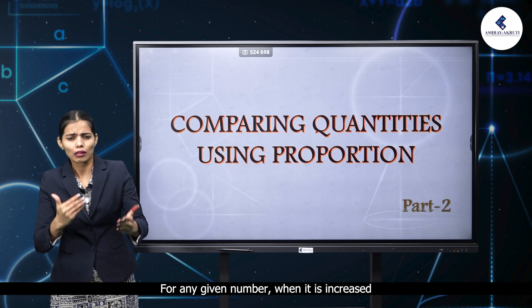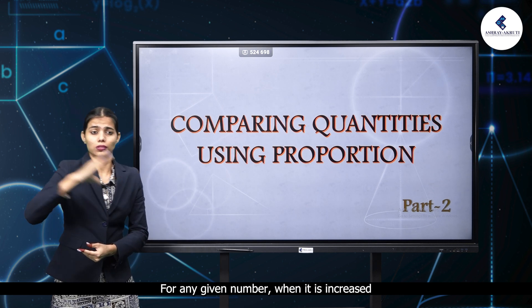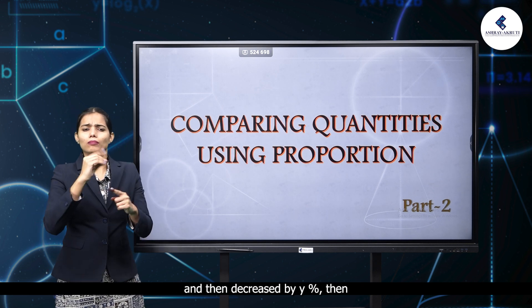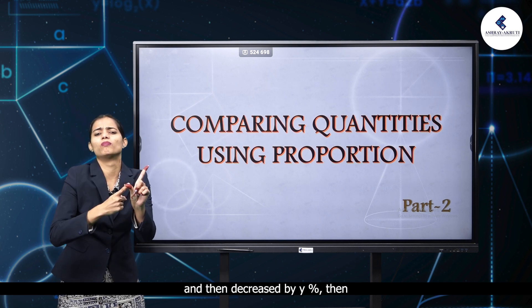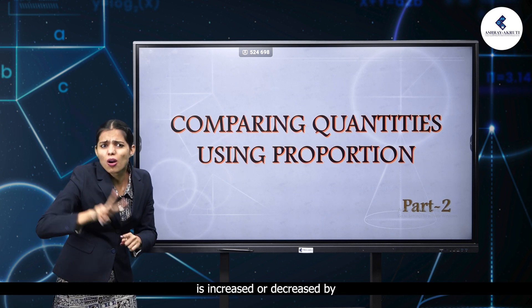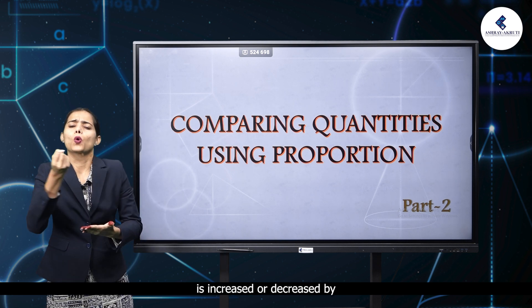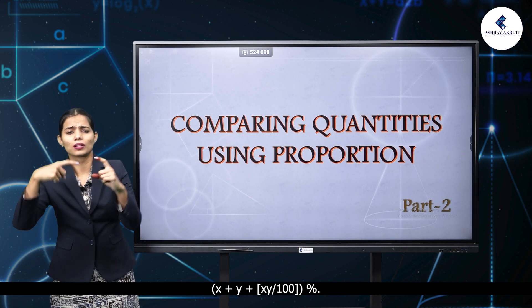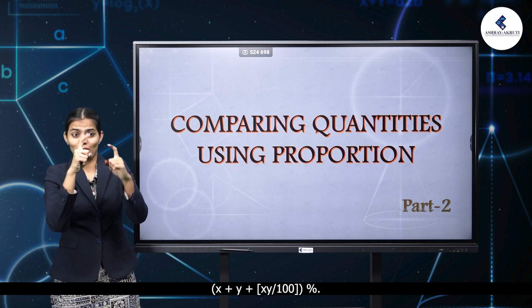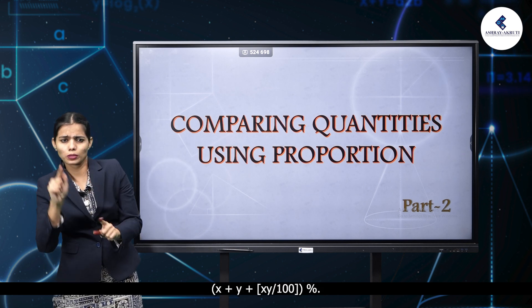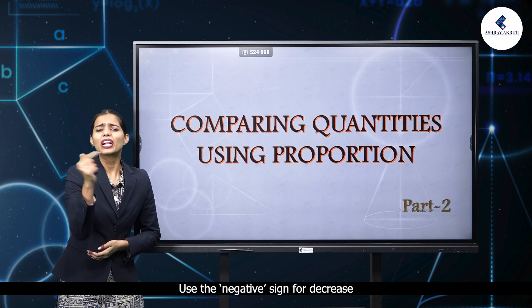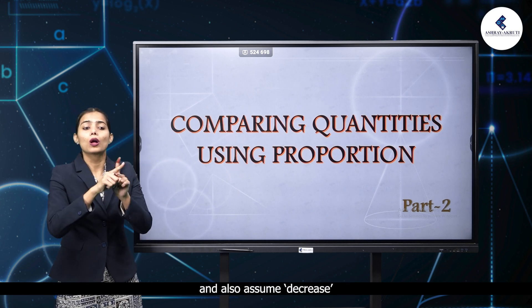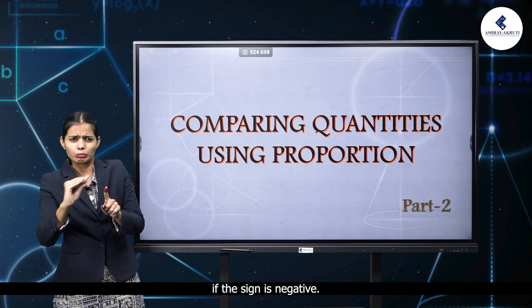For any given number, when it is increased first by X percent and then decreased by Y percent, then the value of the number is increased or decreased by X plus Y plus XY by hundred percent. Use the negative sign for decrease, and also assume decrease if the sign is negative.